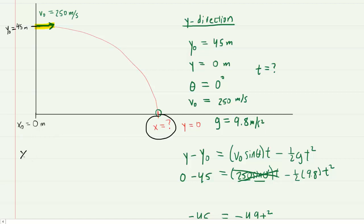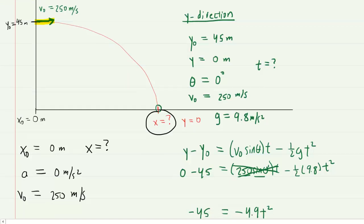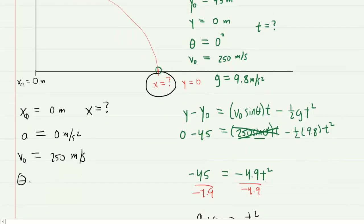The initial x-coordinate is 0 meters, as indicated in the picture. The final x-coordinate is unknown, so that's what we'll be looking for in part B. The acceleration in the x-direction is actually 0 meters per second squared because gravity does not act horizontally. The initial speed with which the projectile is fired is known again to be 250, and the angle at which that projectile was fired is again 0 degrees.